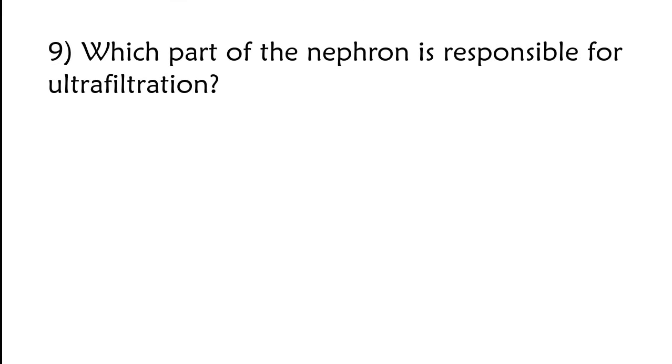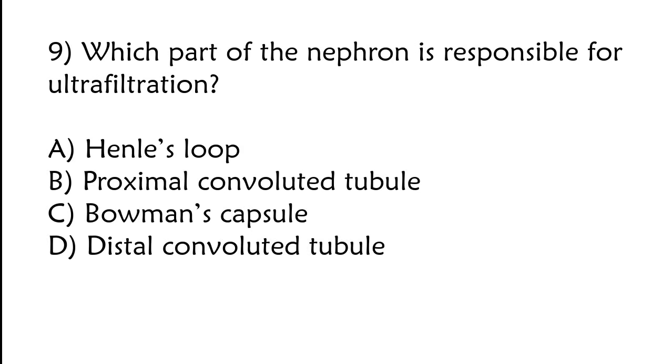Which part of the nephron is responsible for ultrafiltration? Henle's loop, proximal convoluted tubule, Bowman's capsule, or distal convoluted tubule. The correct answer is option C, Bowman's capsule.